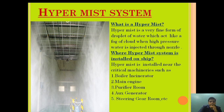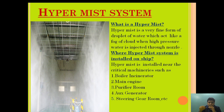The second question is: where is this installation required? The Hypermist system is installed where critical machinery is present, such as the boiler, incinerator, main engine, purifier, oxygen generator, and steering gear room. As you can see, the Hypermist acts like a fog to extinguish the fire, and it is provided in all critical machinery areas.